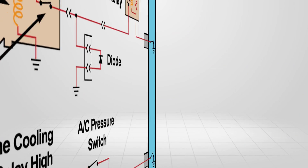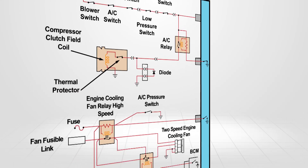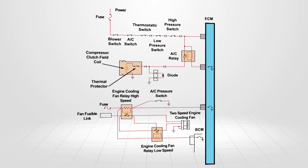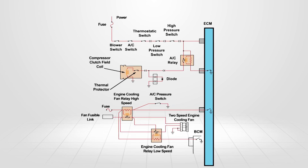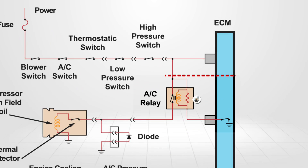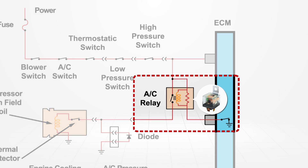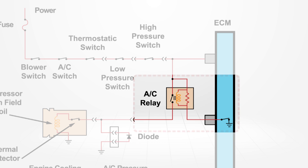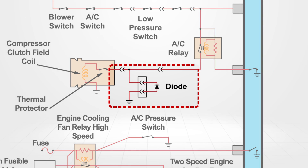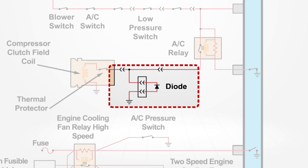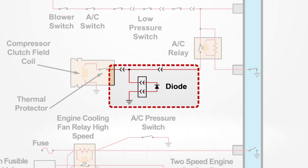The clutch allows the AC system to be controlled by an electronic circuit. This can be done by a ground in the ECM and a relay. They may also have a suppression diode fitted to eliminate back EMF voltage spiking the circuit.